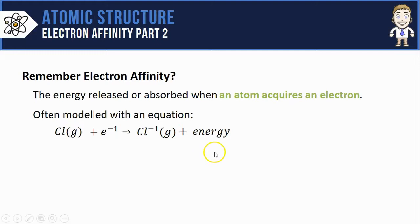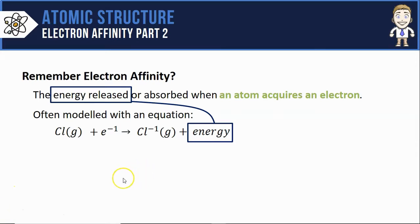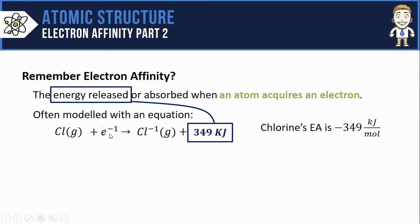We represent that energy is being released by writing it on the products side in the equation. If you looked it up you'd find that chlorine's electron affinity is reported as negative 349 kilojoules which simply means that when this chlorine atom gained that electron it released 349 kilojoules of energy.